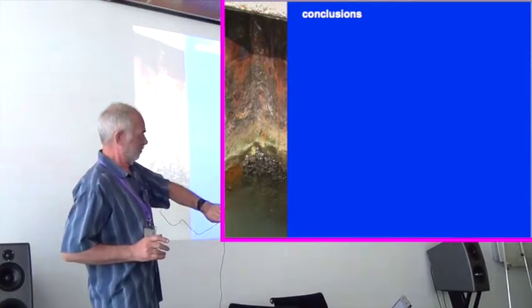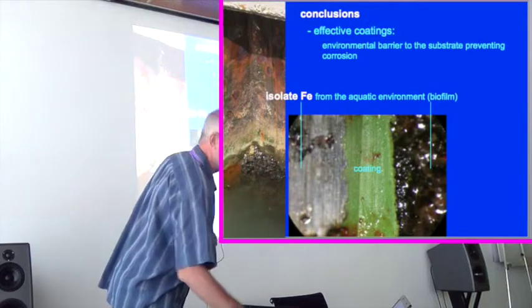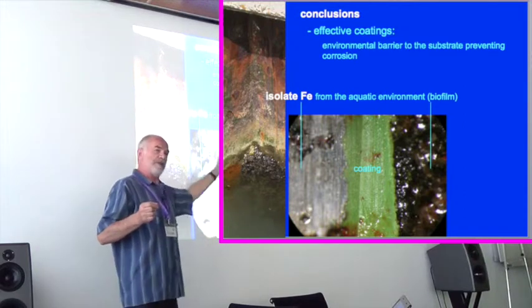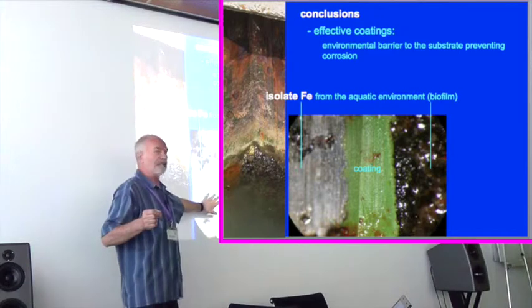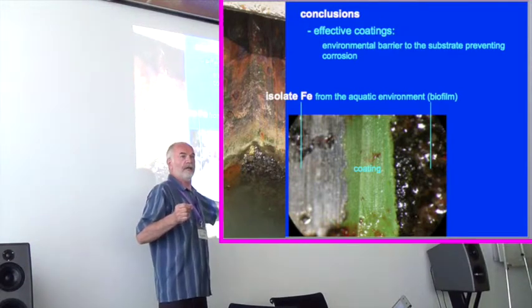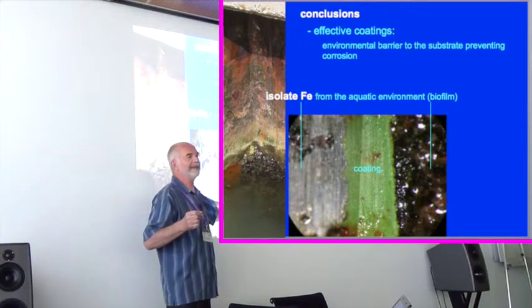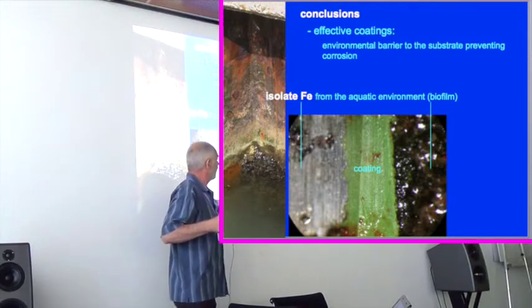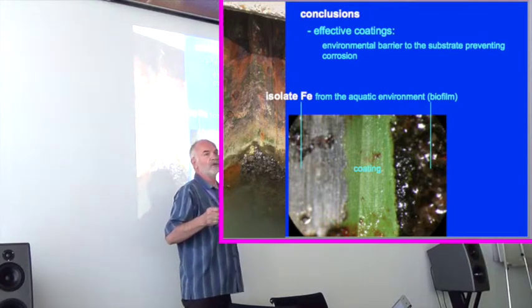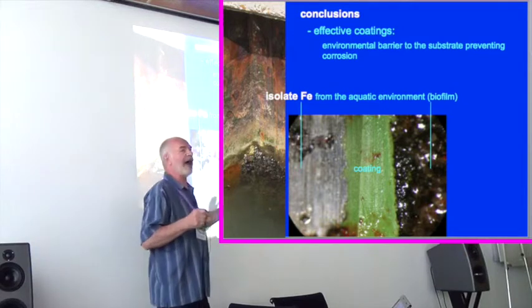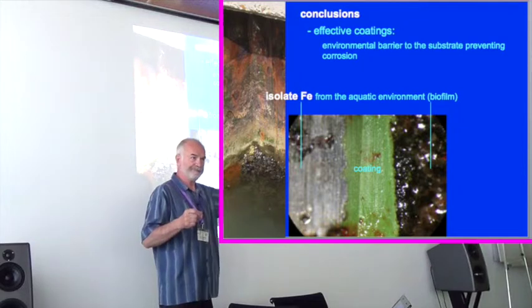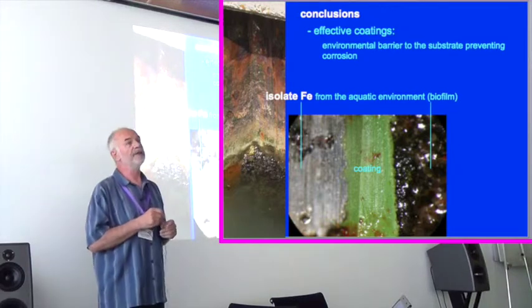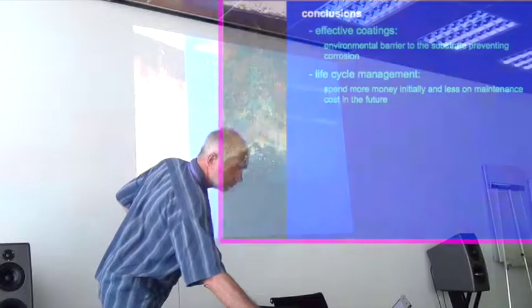Our conclusions. This is a photograph under a microscope. You have here your iron. This is a good coating. Mrs. Brandt will say a little bit more about that, I guess, this afternoon. A good coating and on the other side, a biofilm. So what is done here is a complete isolation of the bio community flourishing and your iron, who stays in good condition, in this case 23 years.